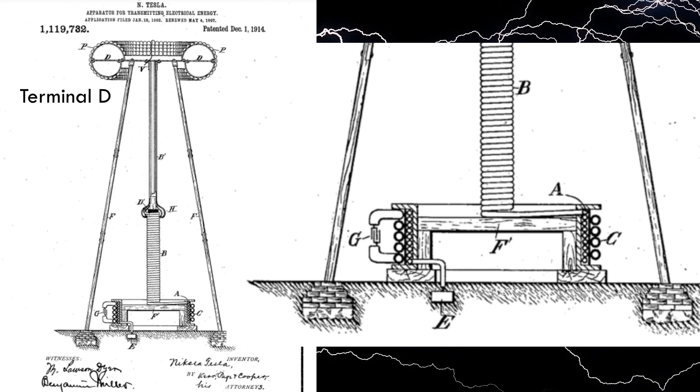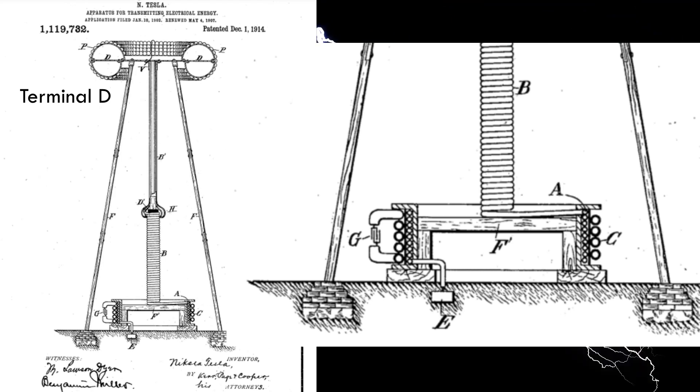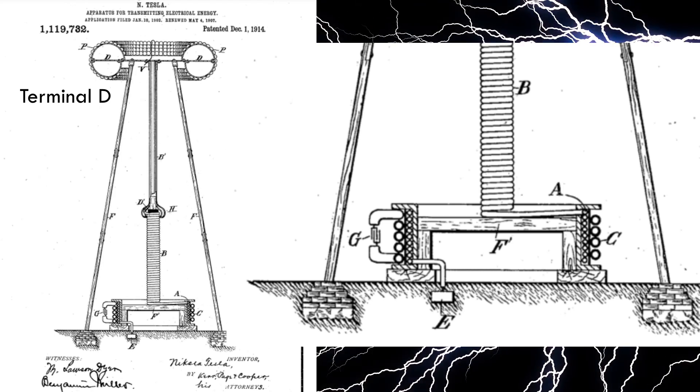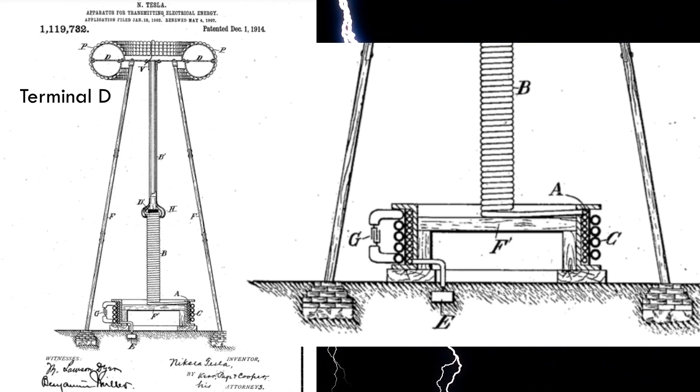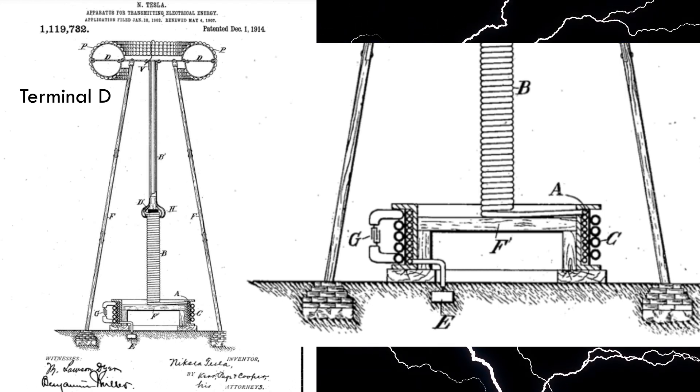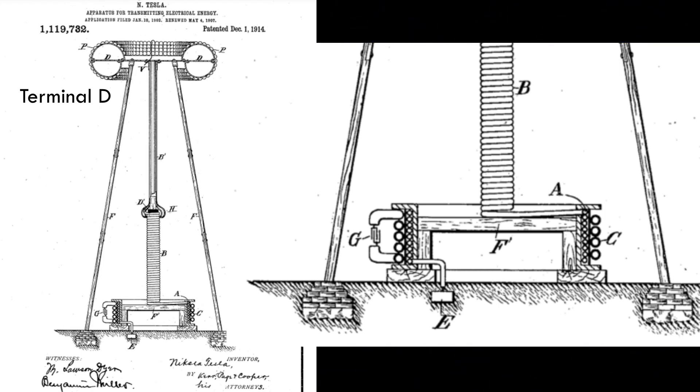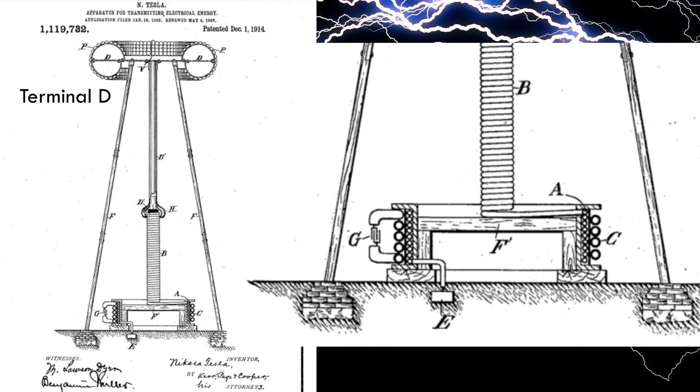2. In apparatus for the transmission of electrical energy, a circuit connected to the ground and to an elevated terminal, and having its outer conducting boundaries, which are subject to high tension, arranged in surfaces of large radii of curvature, substantially as and for the purpose described.